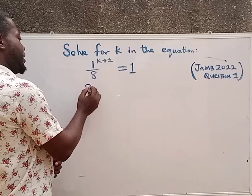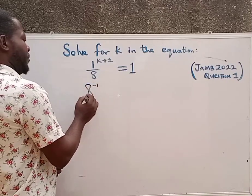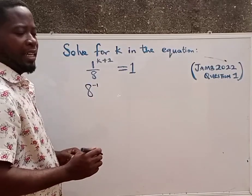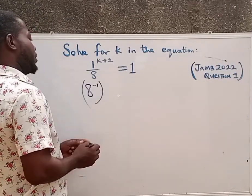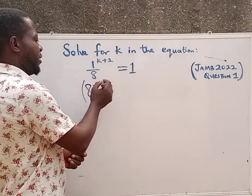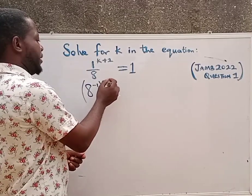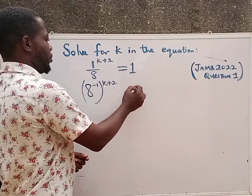Then we are going to have 8 raised to power minus 1. When 8 has changed to 8 raised to power minus 1, then we put it into a bracket. Then we are going to have this power here, k plus 2, equals to 1.